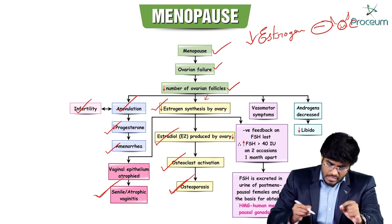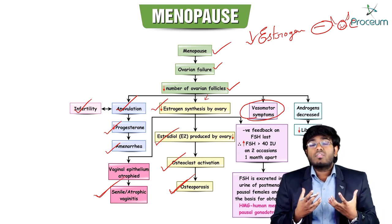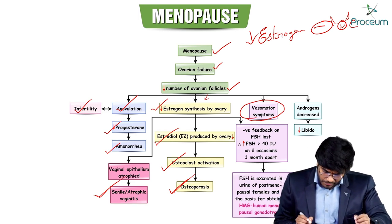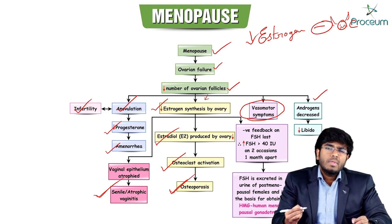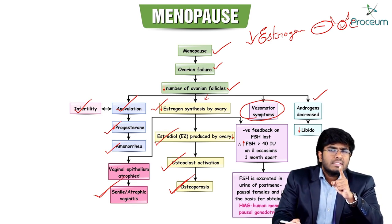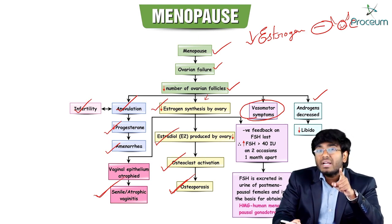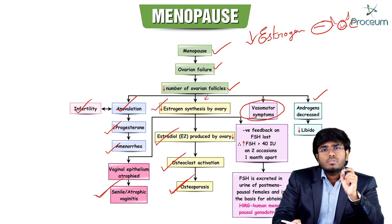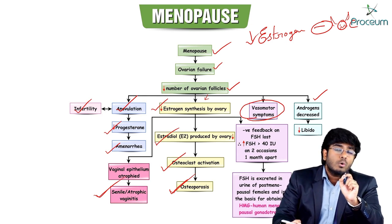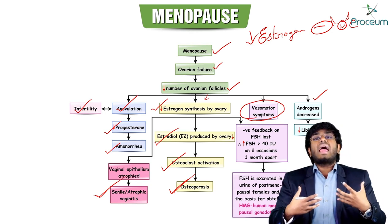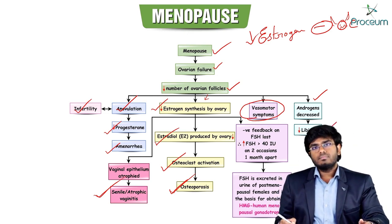These high LH levels especially cause vasomotor symptoms such as hot flushes. The non-functional ovaries also reduce androgen production, since theca interna cells produce androgens that are aromatized into estrogens by granulosa cells. With low androgen levels, there is a decrease in libido.